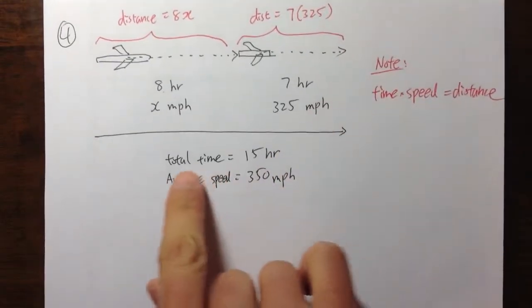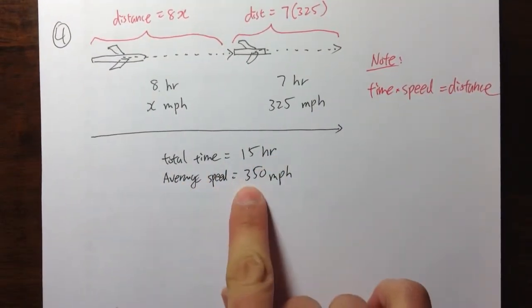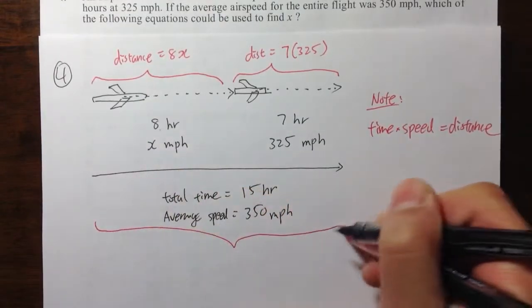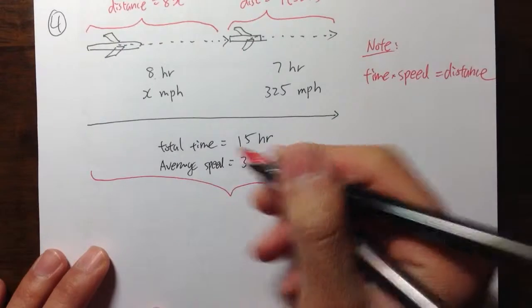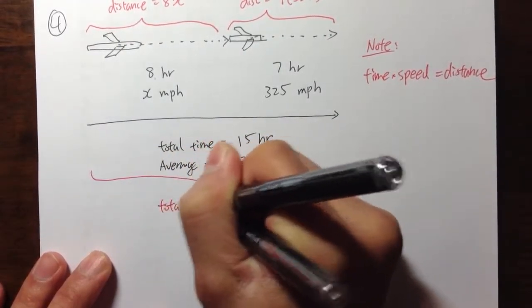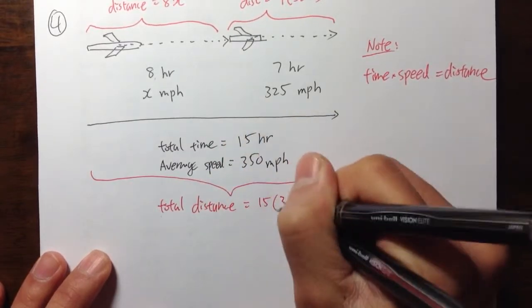And also we have the total time is 15 hours. The average speed is 350. So altogether, all this, the total distance will be 15 times 350.